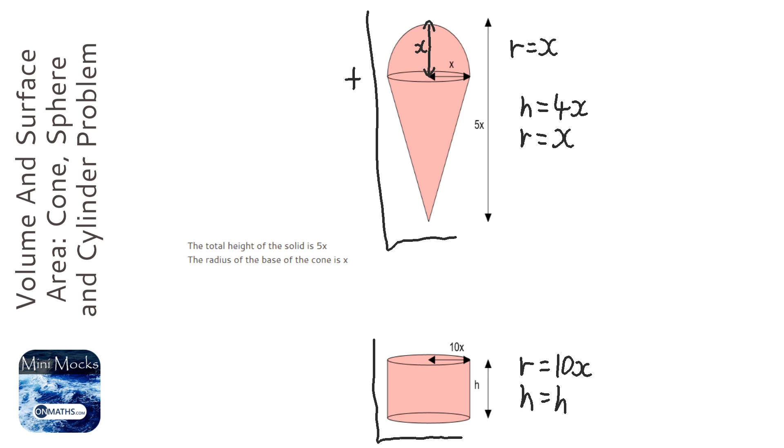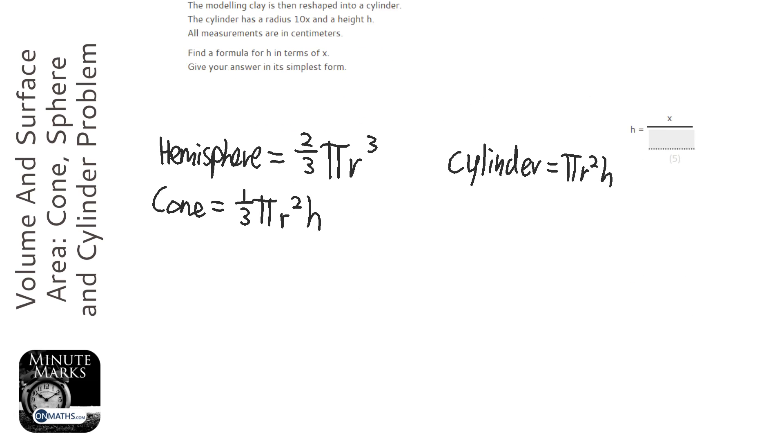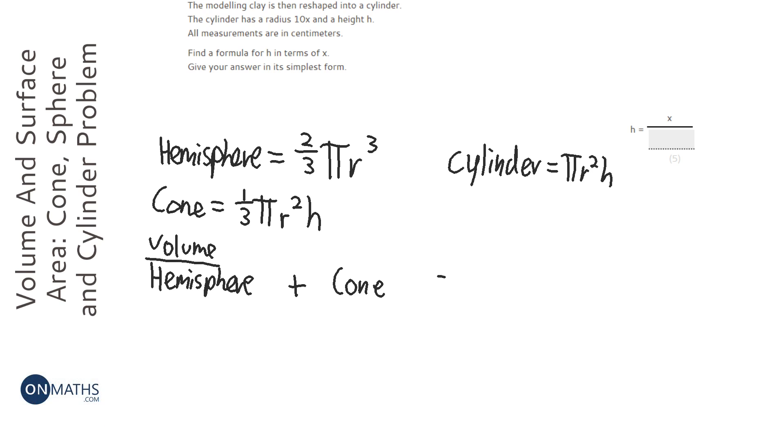So if I add the volume of the hemisphere to the volume of the cone, it should equal the volume of the cylinder. Okay, so we know that hemisphere plus the cone volume, and I should write volume here to show the examiner that I'm working with volumes, equals the volume of cylinder.